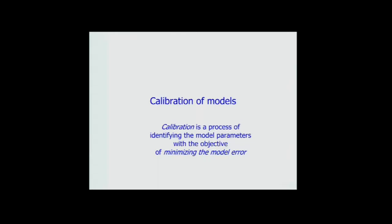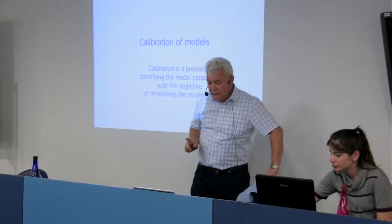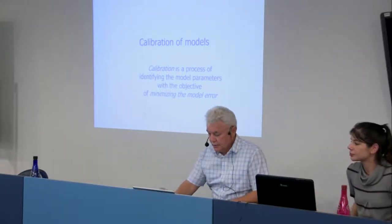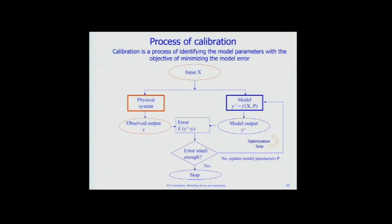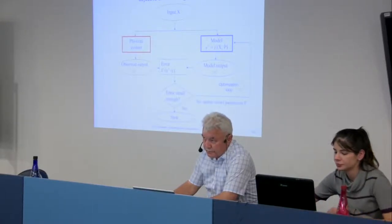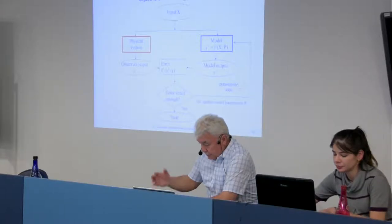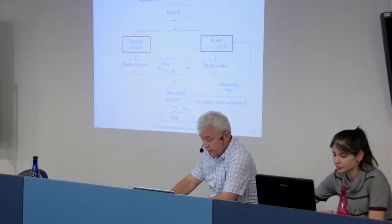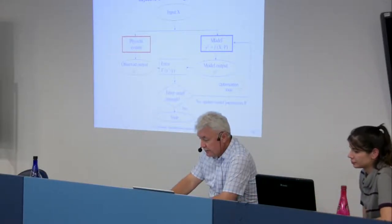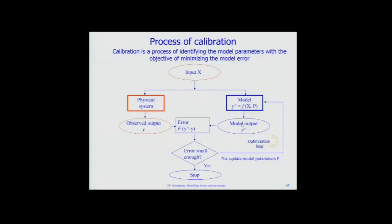Assuming we have good data, let's look at the calibration process with the objective of minimizing model error. We have a physical system — a catchment, river, sediment process, or urban/water distribution network — which produces some output: in hydrology, flow; in a water distribution system, pressure head; in a drainage model, outflow. We then compare model output to observed data.